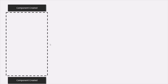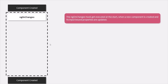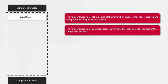Once the component class is instantiated, the Angular lifecycle begins. The first hook we can use to execute some logic during the Angular lifecycle is the ngOnChanges lifecycle hook. This hook gets executed at the beginning when a new component is created and its input-bound property is initialized, and it also gets executed whenever the input-bound property of the component changes. Let's understand these two statements with an example.